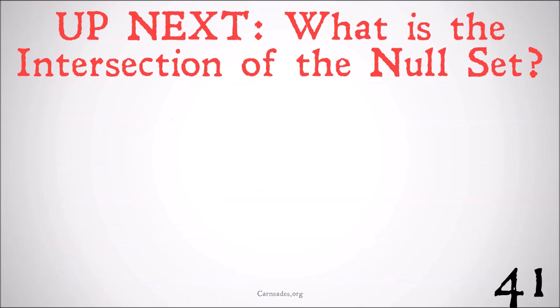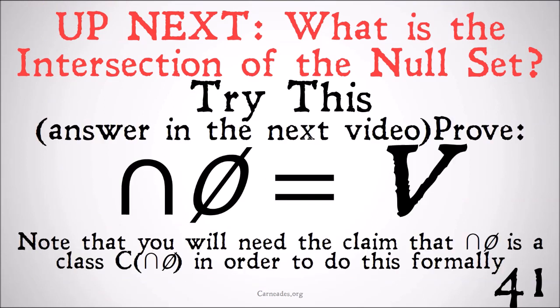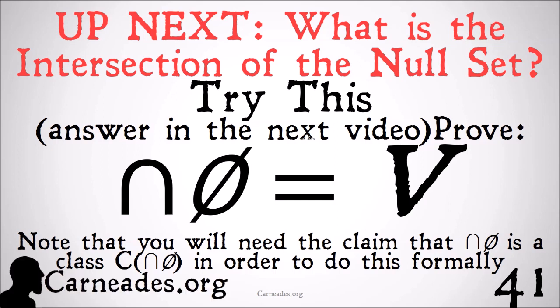Up next, we're going to do another monster proof looking at what the intersection of the null set is — and the answer, big surprise, is the universal class. Try to prove it yourself: prove that the intersection of the null set is simply the universal class. Note that you will need to claim that the intersection of the null set is a class, and use the definition of a class from very early in the series. Watch this video and more here at carnadies.org — watch a new video every single day for the entire month of October. Subscribe and hit that notification bell so you know when new videos are coming out, and as always, stay skeptical everybody.